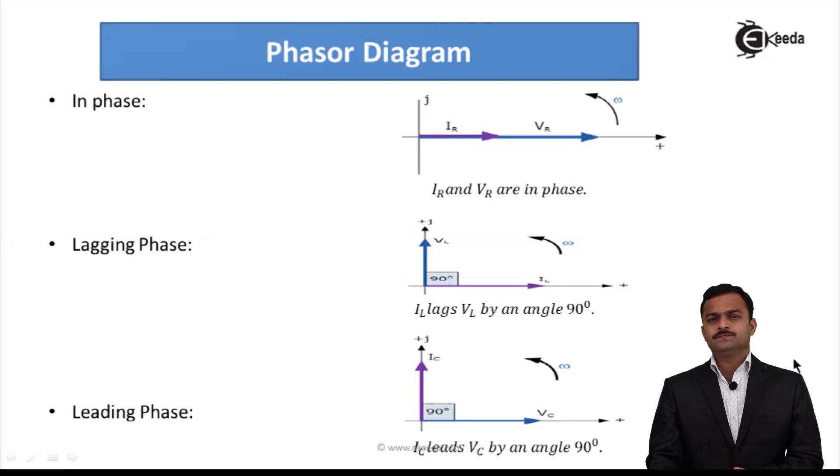Actually, it could be more than two. And phasor diagram advantage is that all the quantities having same frequency can be represented in same diagram and interrelationship of phase, we can calculate very easily.